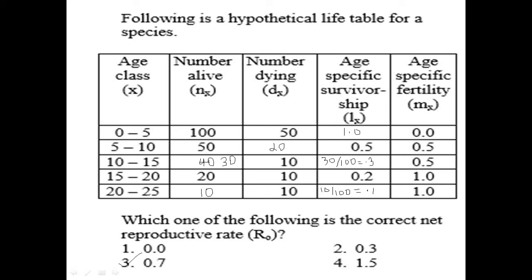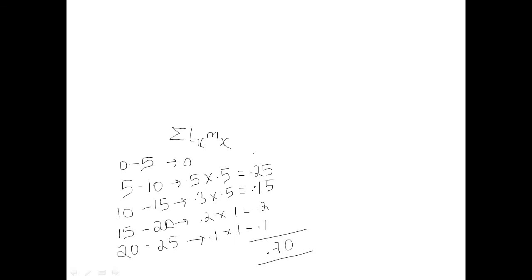For this type of question, first calculate the Lx value if it is not provided, by dividing the number surviving at a particular age group by the number born. After calculating the Lx values, multiply Lx × Mx for each age group, then sum the entire set of values. The formula is R₀ = summation of Lx × Mx. For this question we got the answer 0.7. In my next few videos I will discuss other numericals from ecology. Please like and subscribe — thank you for watching.